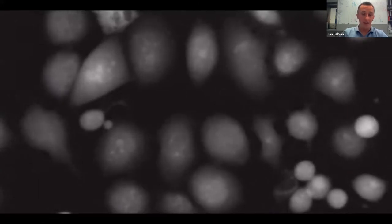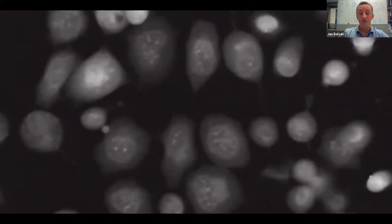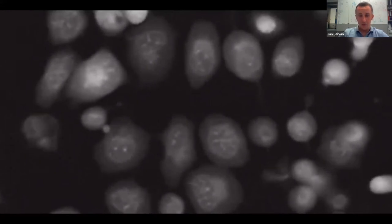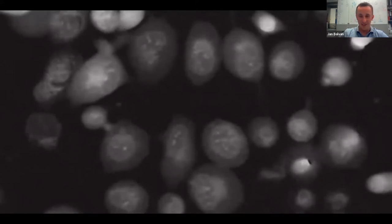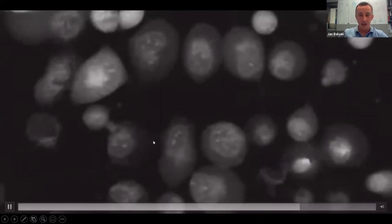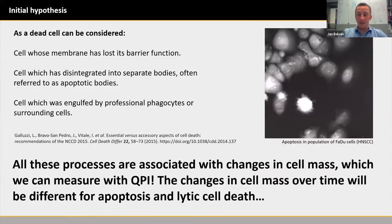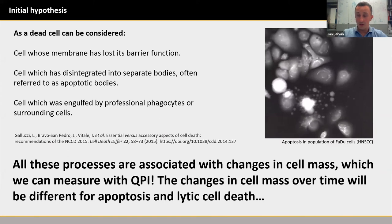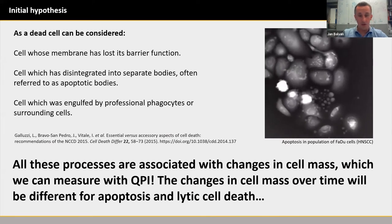You can see how the cells are releasing their content, how they are rupturing. Taking it together, we can say that all processes of cell death are connected with changes in cell mass. For example, during lytic cell death there is a rupture of the plasma membrane; during apoptosis there is disintegration into apoptotic bodies; during entosis or cannibalism there is engulfment by neighboring cells or macrophages. All these processes are connected with cell mass changes.